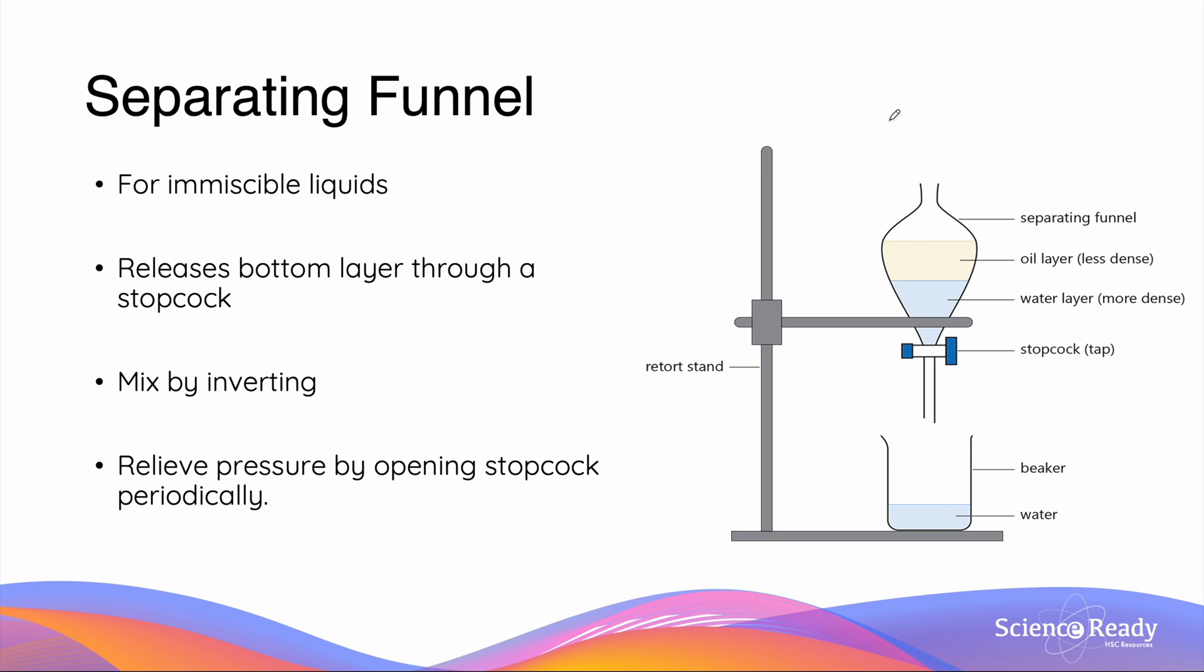The final separation technique we will look at is the separating funnel. This is one that we use for the separation of immiscible liquids - immiscible liquids are ones which do not mix into one another such as oil and water which we can see in this diagram. The water layer of the mix jar will appear clearly defined and separated from the oil layer on the top. This method is simple - we open the tap of the separating funnel called the stopcock and the water layer will pass through the bottom into our beaker.